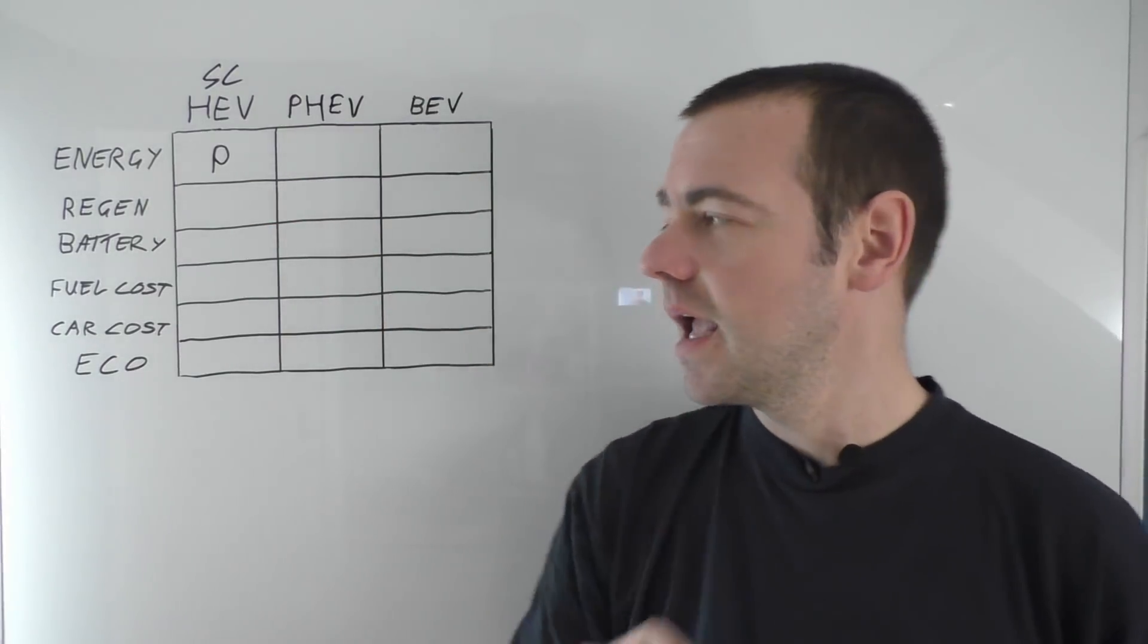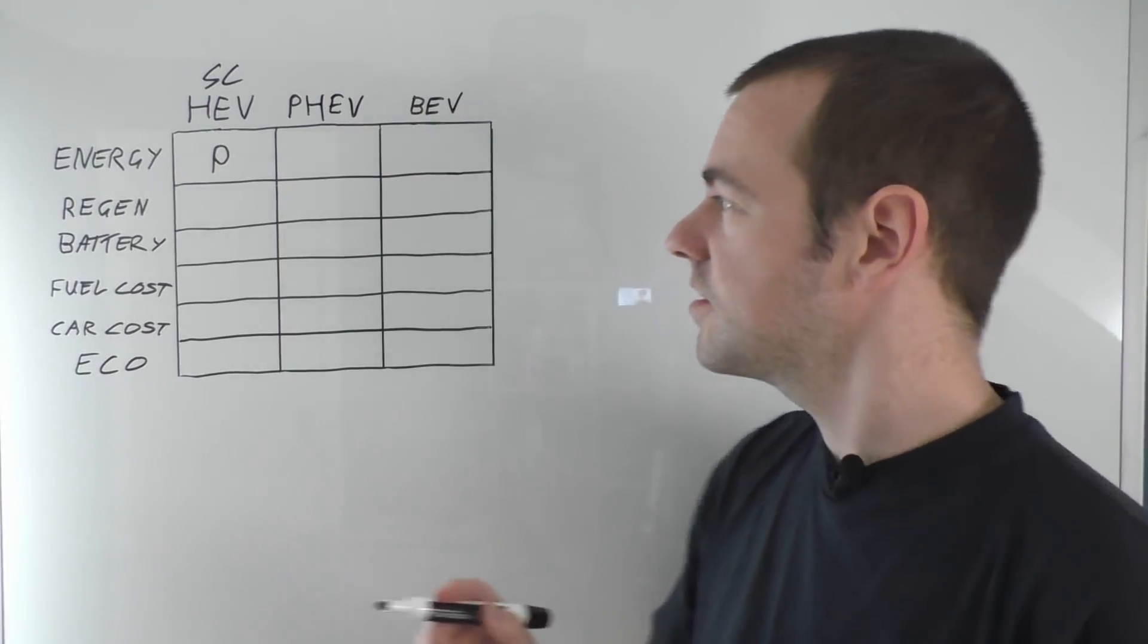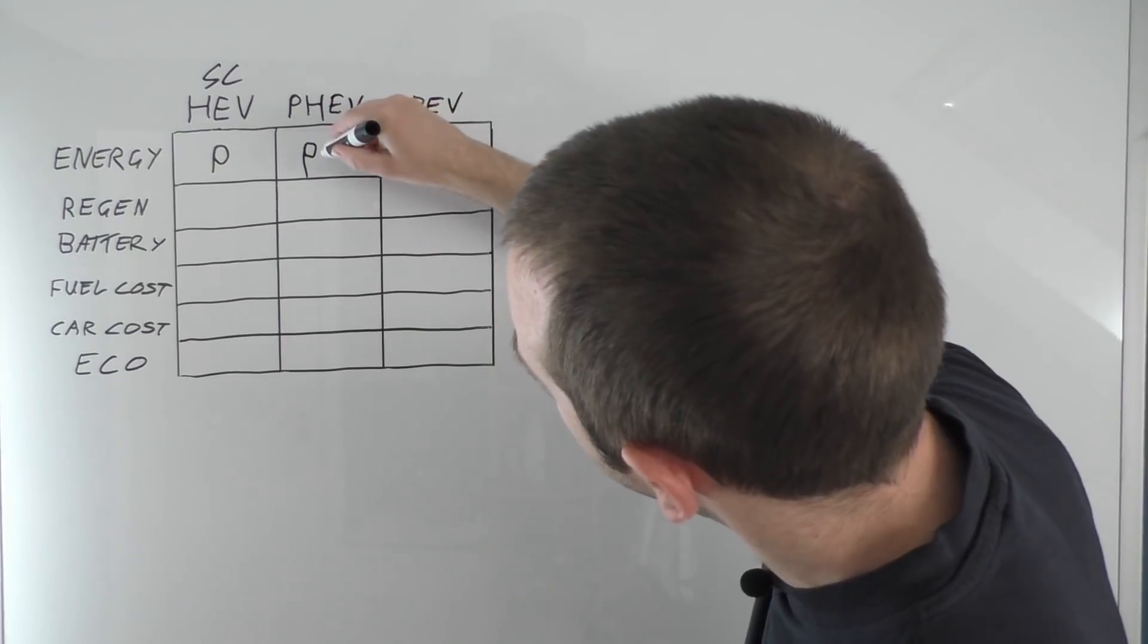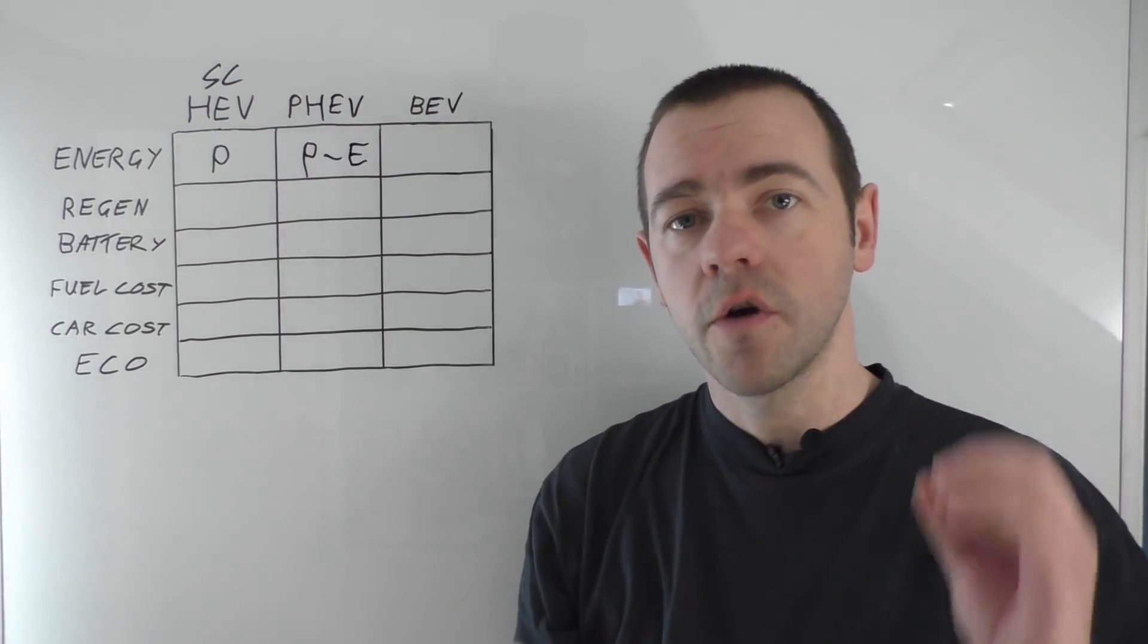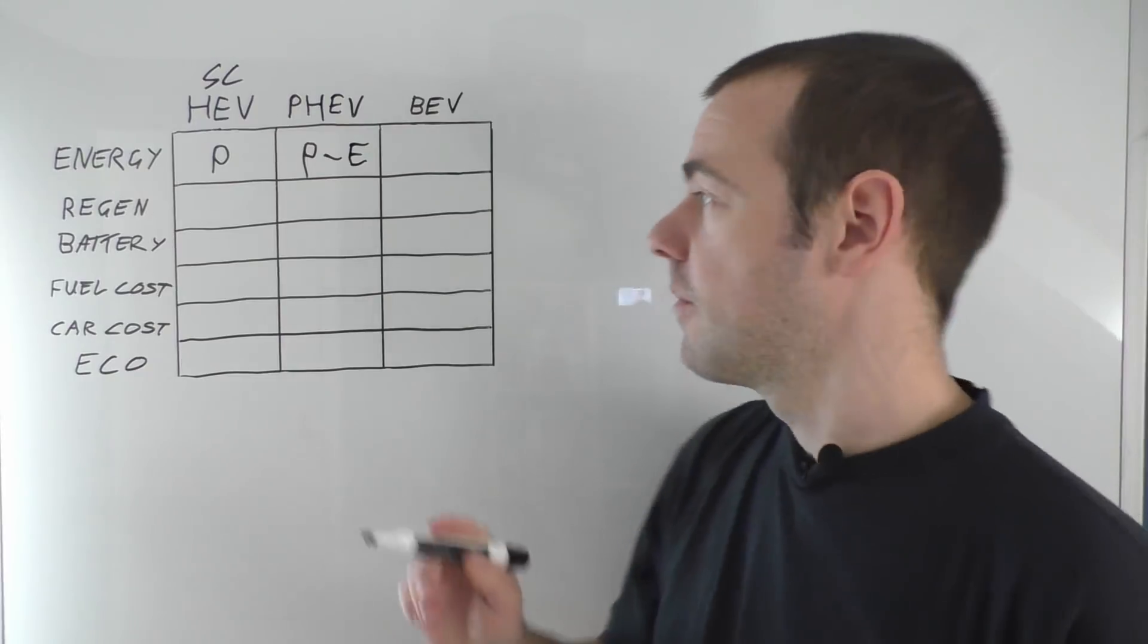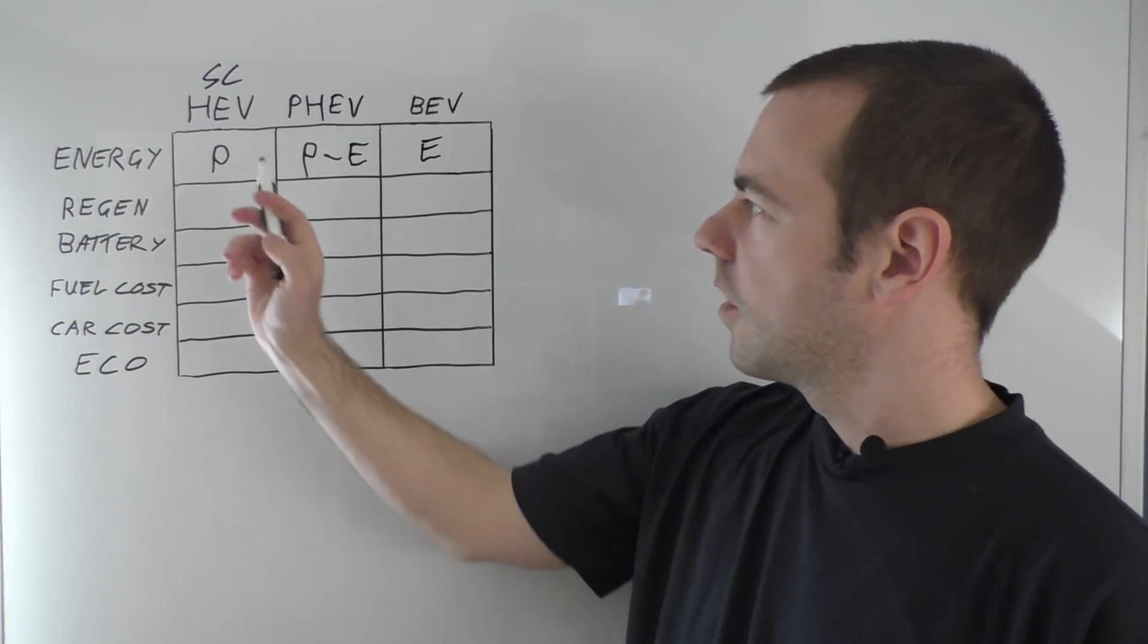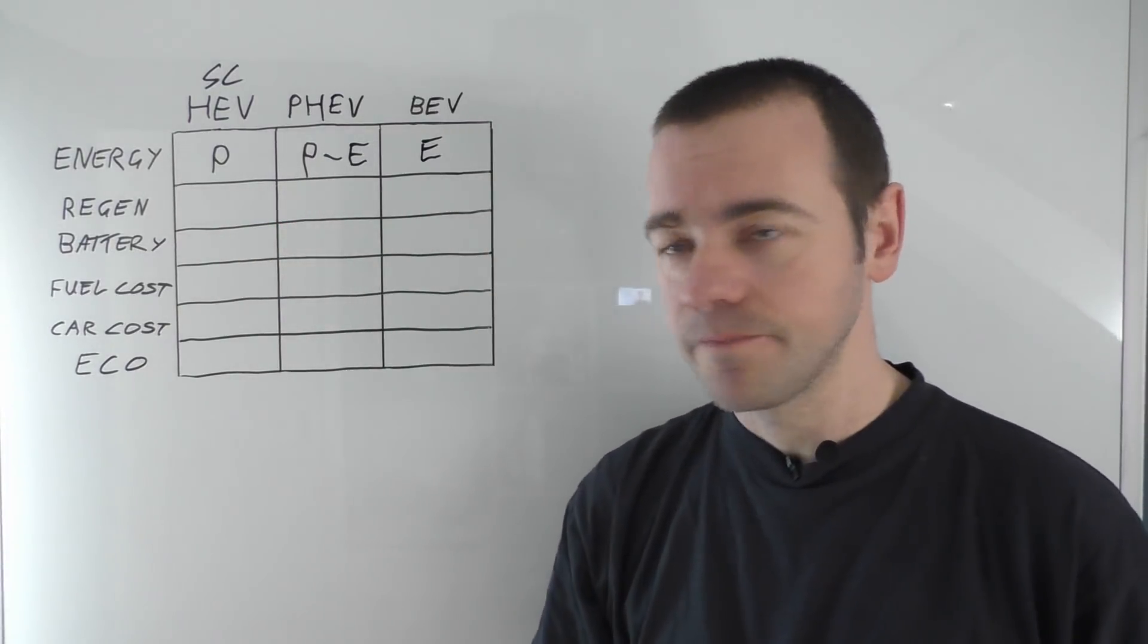I'll come back to that in a second. A plug-in hybrid electric vehicle, its very name suggests that it can be plugged in but of course it can use petrol and electricity. In this case you can plug it in so you've got an option of either or both. Battery electric vehicle of course only gets its electricity from the plug, it cannot use a petrol engine. Therefore we've got petrol only, petrol and electric, and electric.